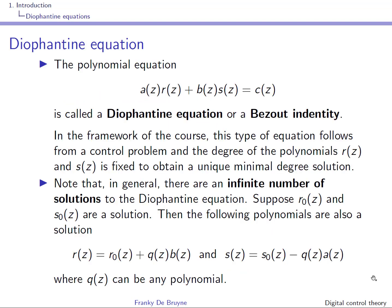In this course we will encounter polynomial equations of the type shown here, called Diophantine equations or sometimes a Bézout identity. What we will do now is see how you can solve those equations. In the framework of this course, the A, B, and C polynomials will be known. The unknowns are the R and S polynomials, but the degrees of those polynomials are fixed so that you can obtain a unique minimal degree solution.